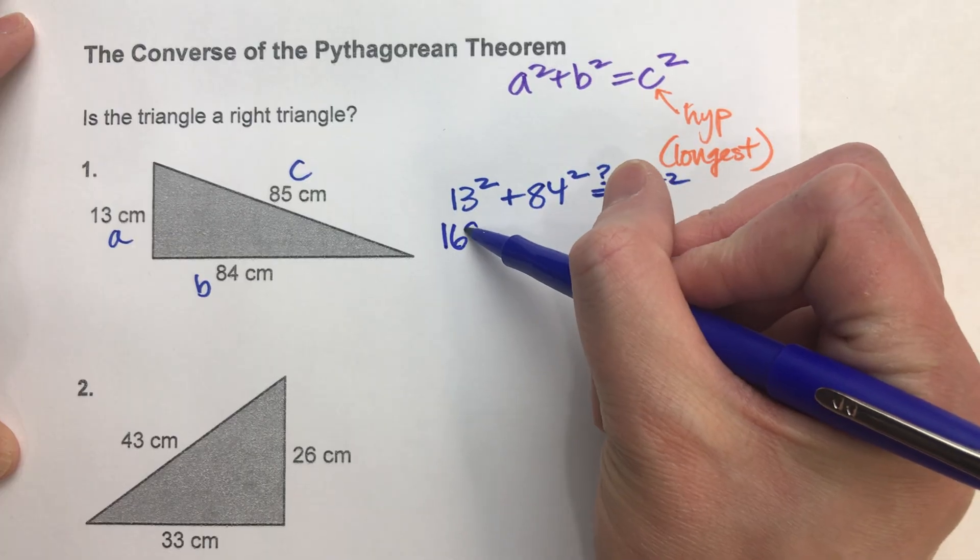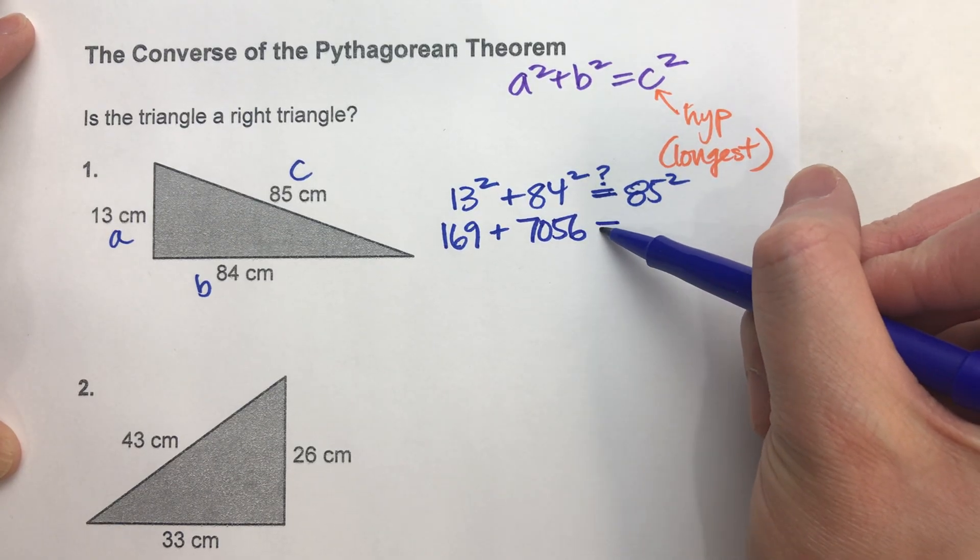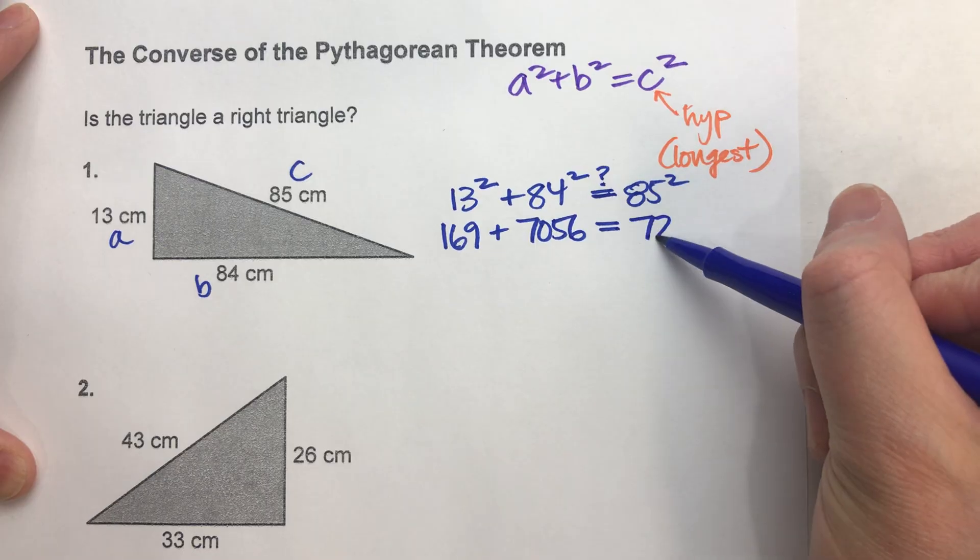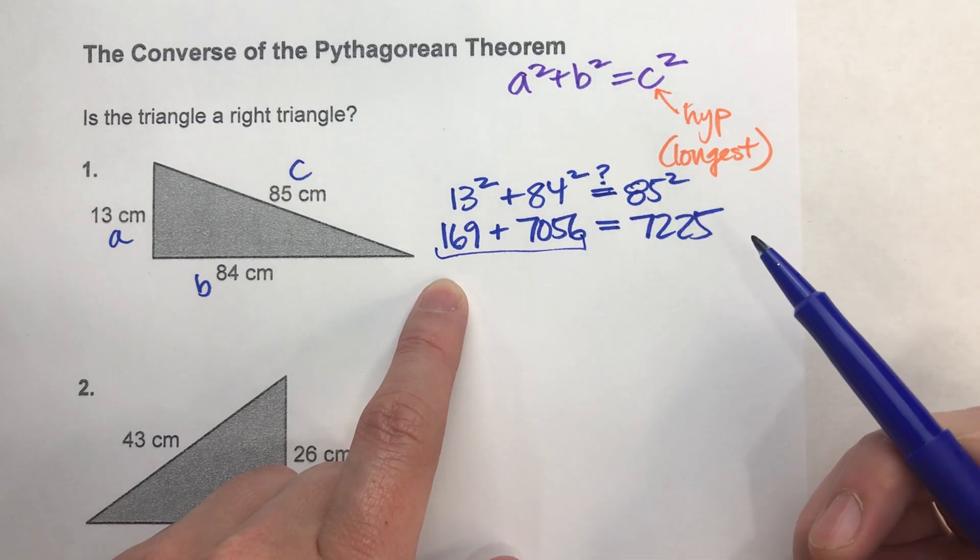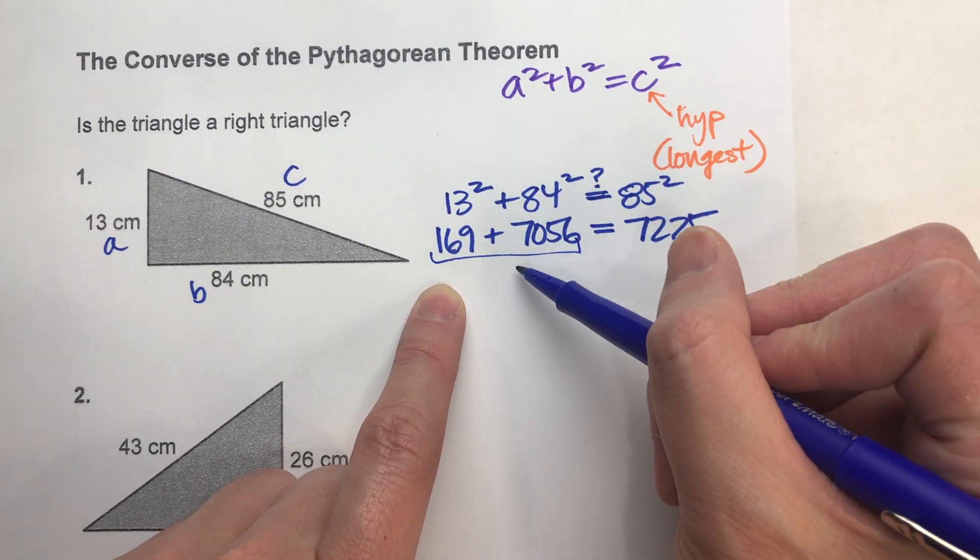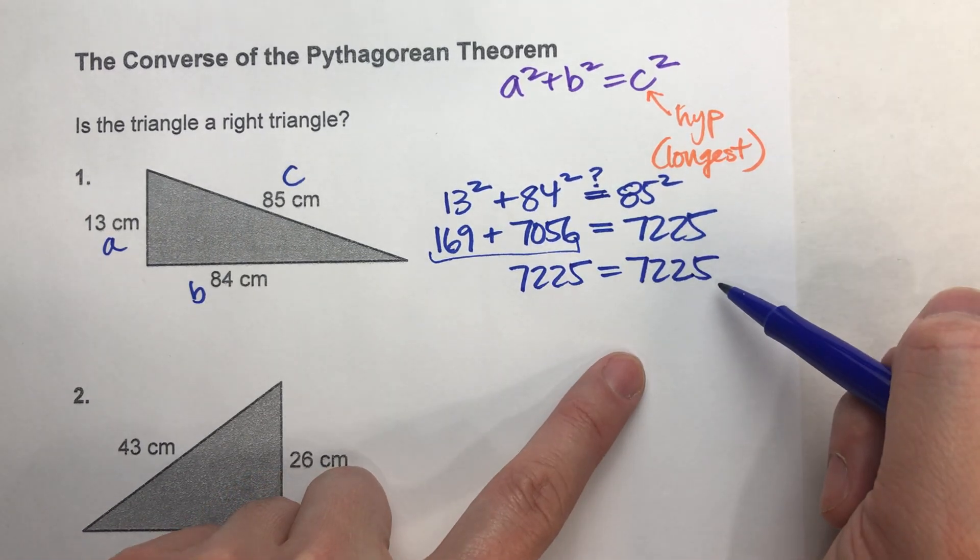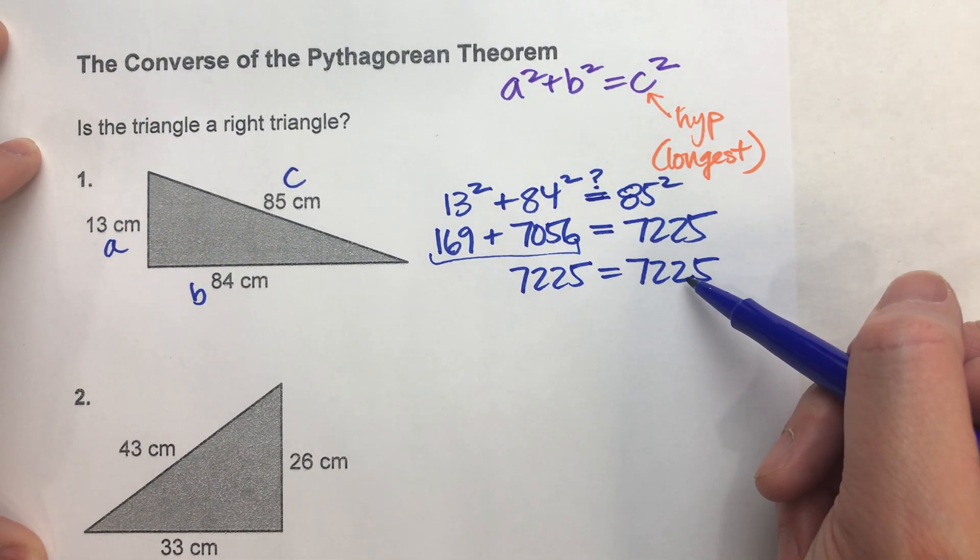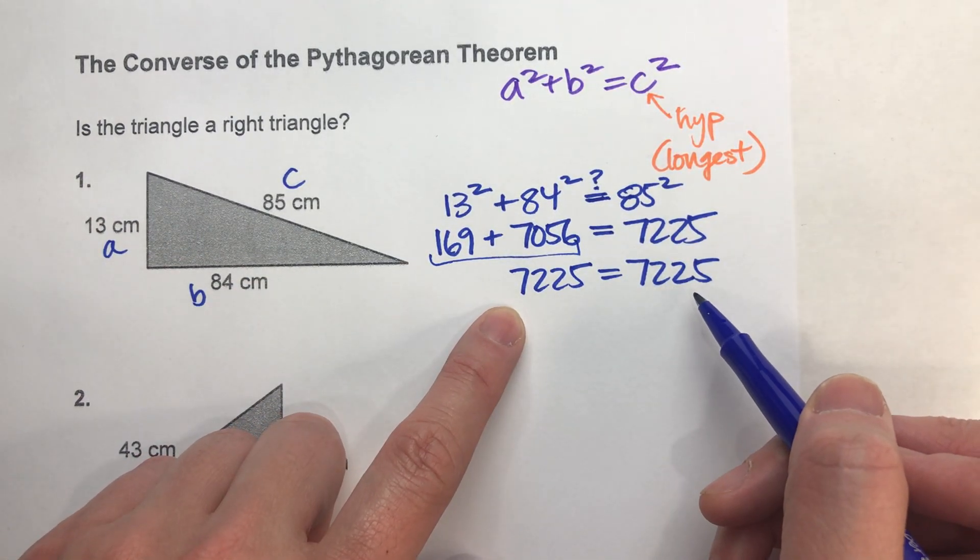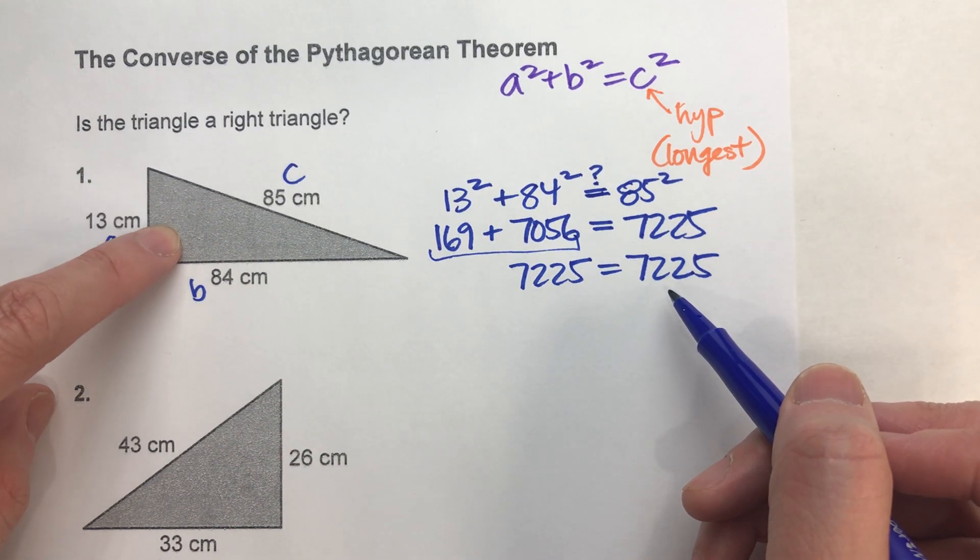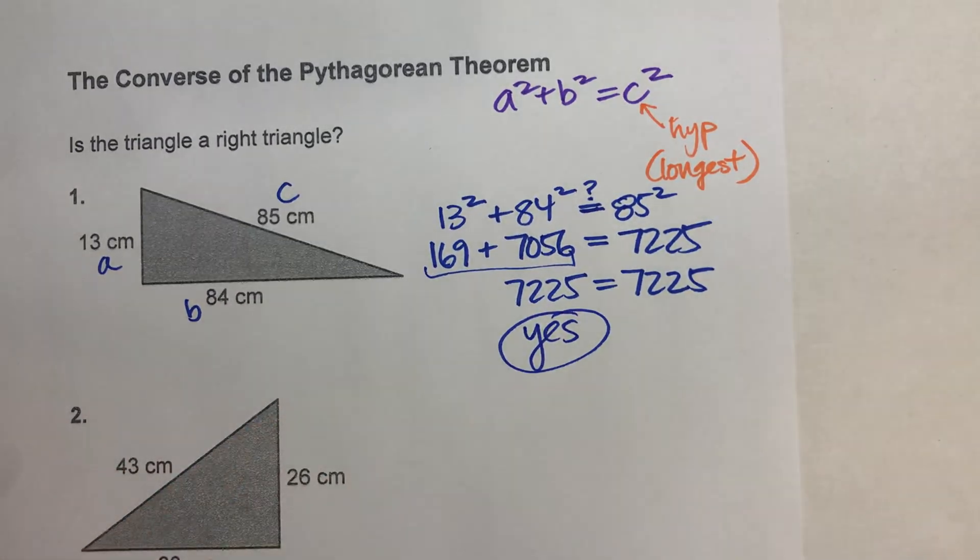13 squared is 169. 84 squared is 7056. And we want to know, does that equal 85 squared, which is 7225? We just need to add these two numbers up together and see what we get. When we add these up, we get 7225, and does it equal 7225? Yes, it does. So the two sides do equal each other. What does that tell me? It tells me that this is a right triangle because the Pythagorean theorem actually worked for it. So yes, this is a right triangle.